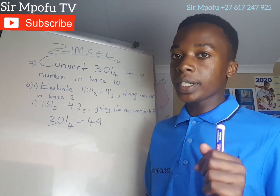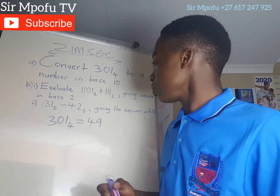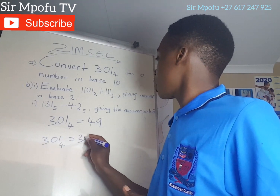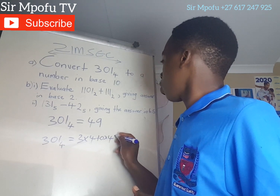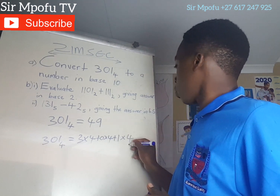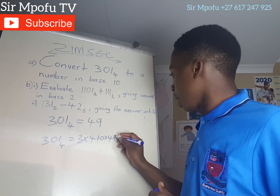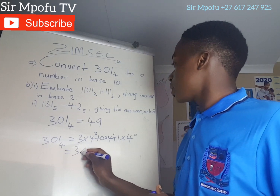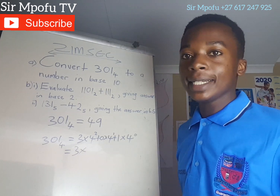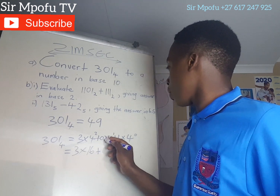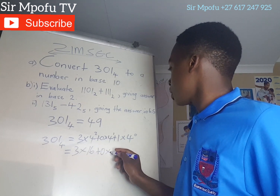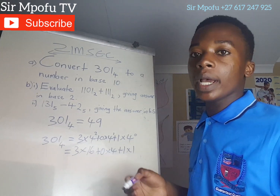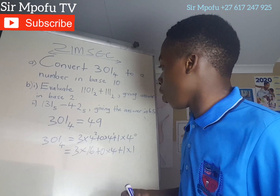Now using the expanded method: 3, 0, 1 in base 4. This is the same as 3 times 4 to the power 2, plus 0 times 4 to the power 1, plus 1 times 4 to the power 0. So that gives 3 times 16, plus 0 times 4, plus 1 times 1.